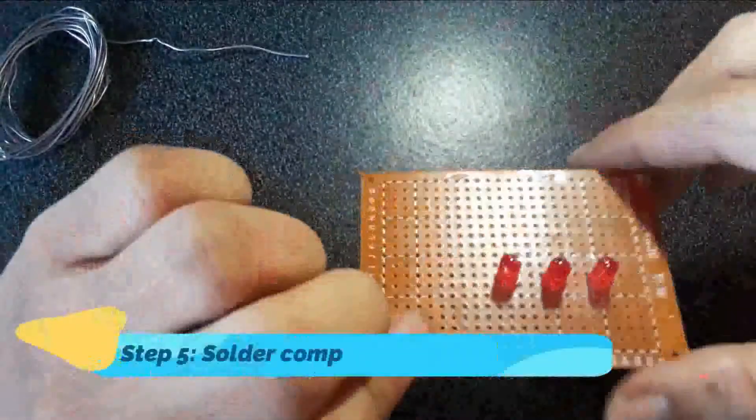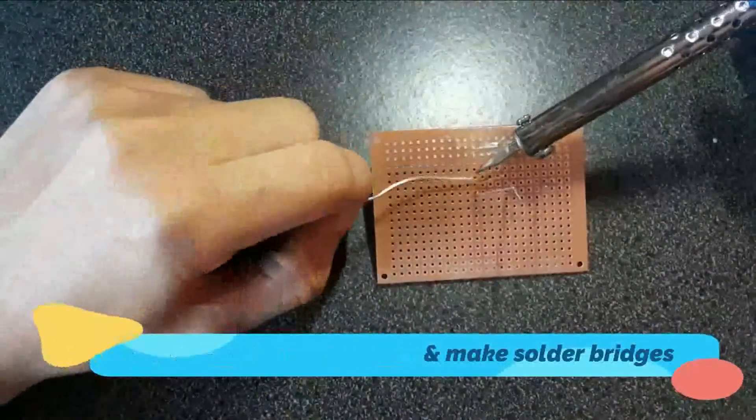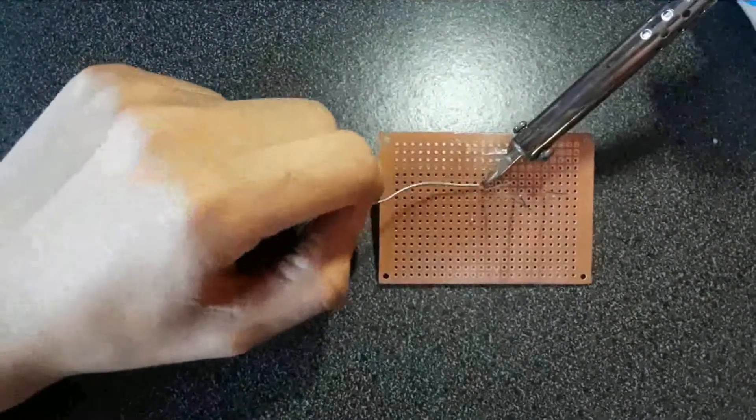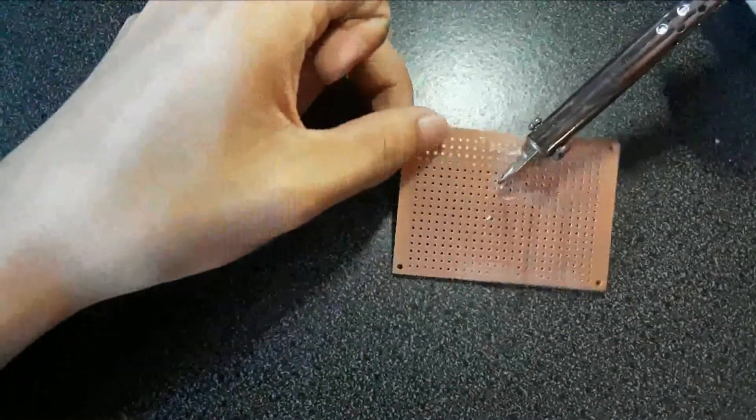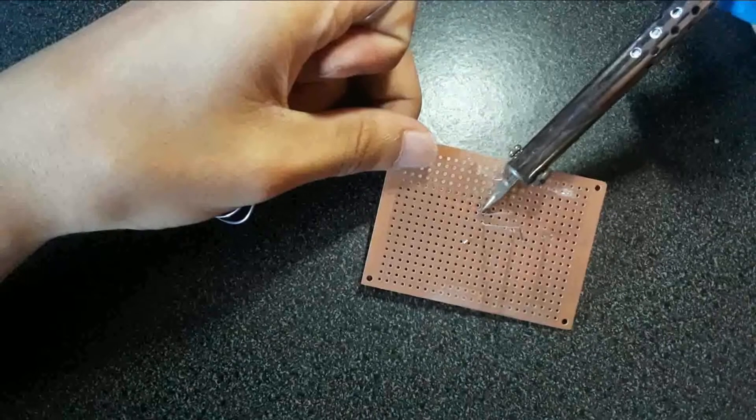Step 5: Solder components and make solder bridges. After finding the right place of components in the PCB, we will now mount the components through soldering.